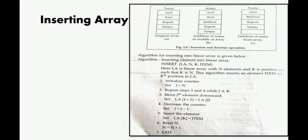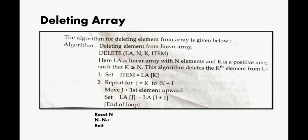You have to subtract 1 from the element so that your counter goes up and then you have to put that element there. So LA[K] - whatever kth position was, at that position you have to write the name of the item, Milind's name. And again, N plus 1 so that you have to point out, and then exit. In this way you can insert an array.